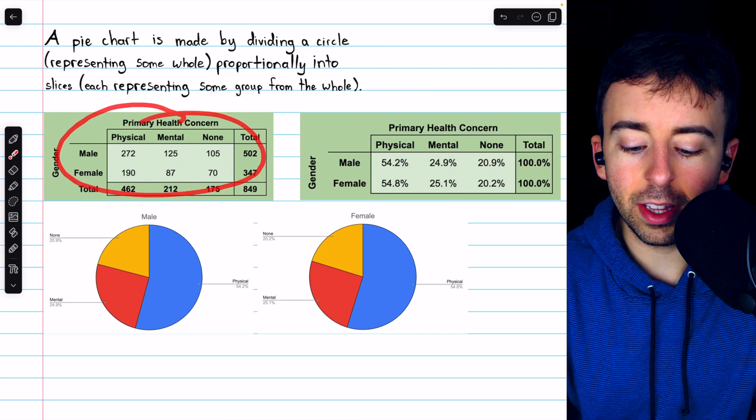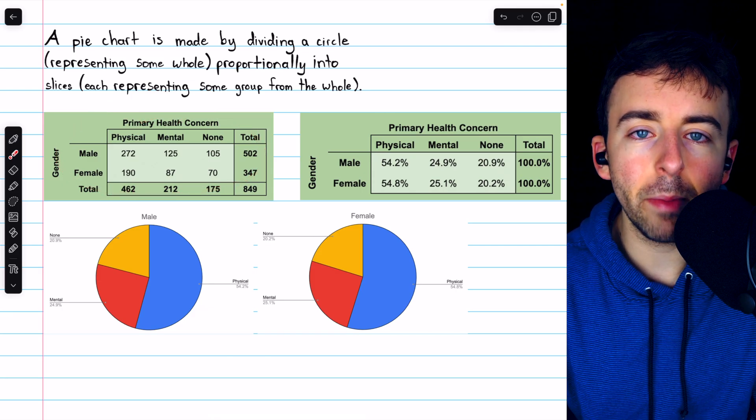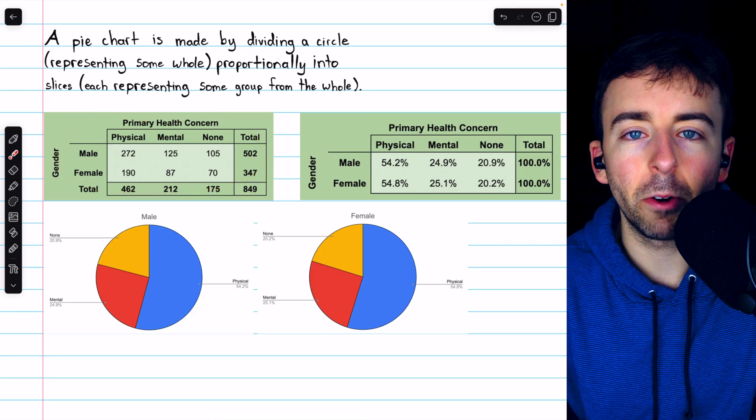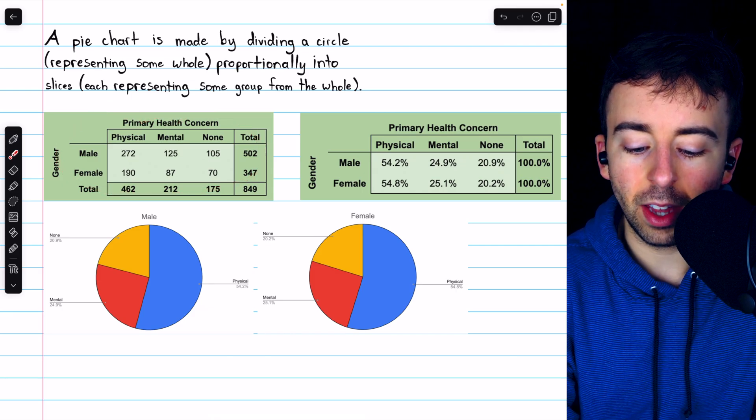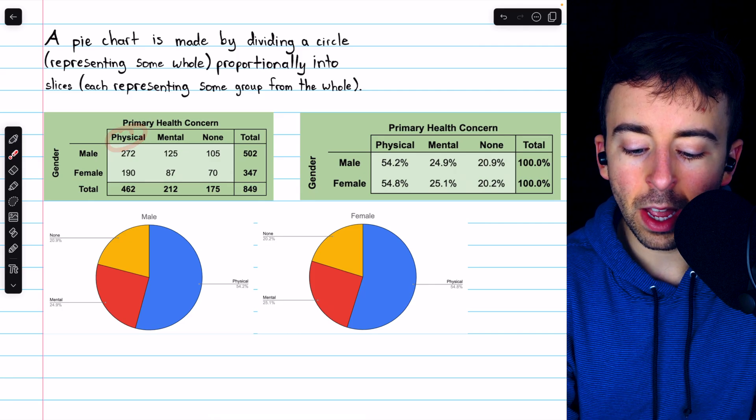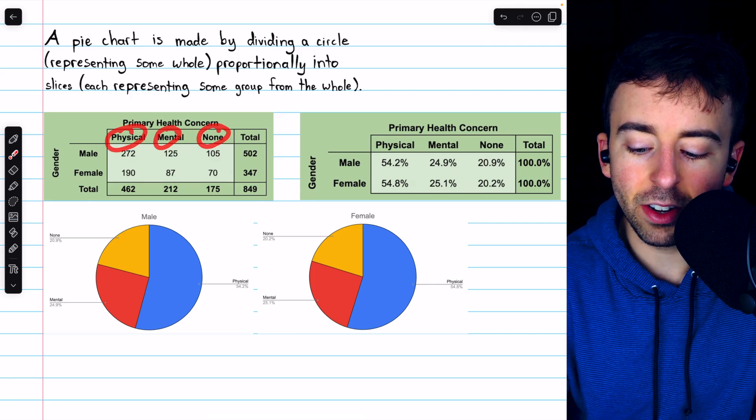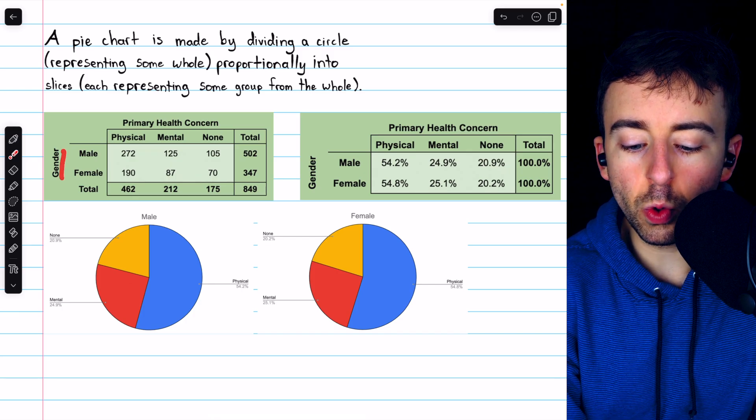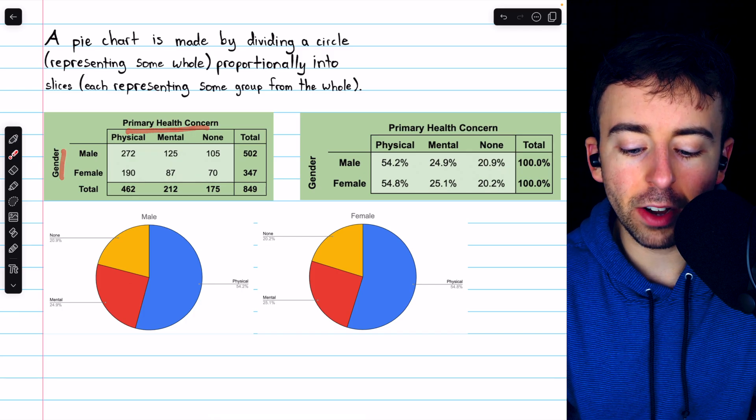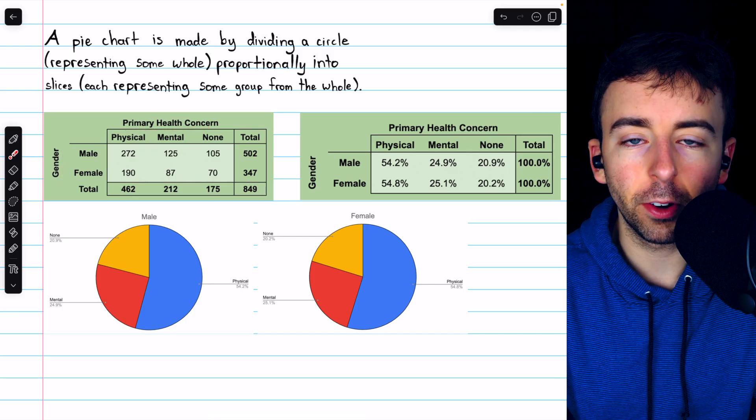For example, here's a table showing the results of a poll asking men and women about their primary health concerns. Some said their primary concerns were physical, some mental, some said they had no primary health concerns. Here we have two categorical variables: gender and primary health concern.